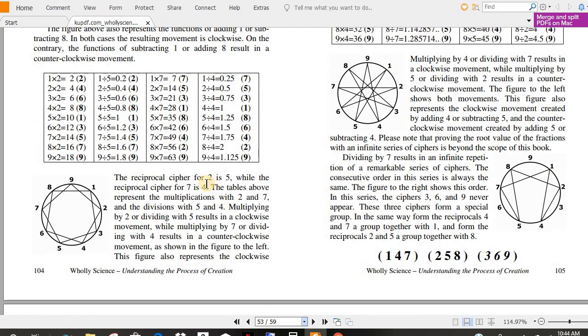The reciprocal cipher for two is five, while the reciprocal cipher for seven is four. The tables above represent the multiplications of two and seven, and the divisions with five and four. Multiplying by two or dividing with five results in a clockwise movement, while multiplying by seven or dividing with four results in the counterclockwise movement, as shown in the figure to the left.